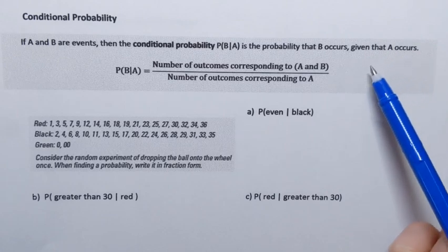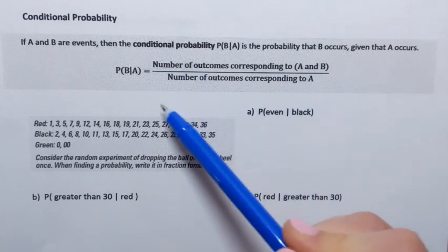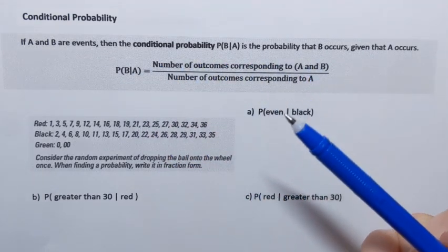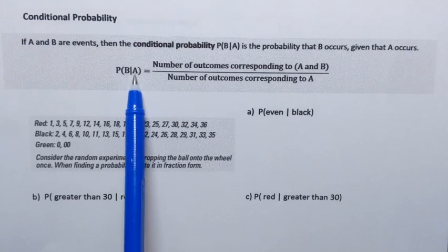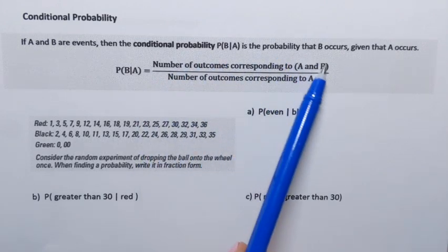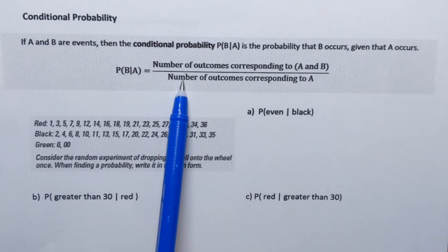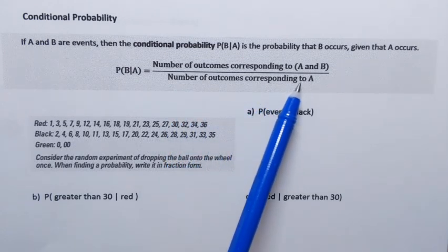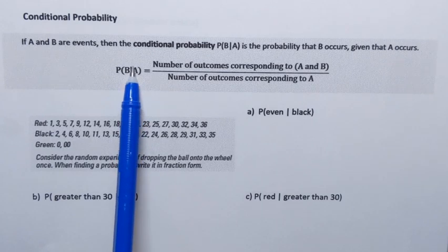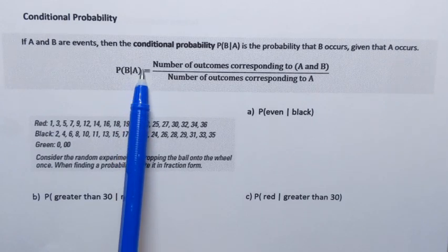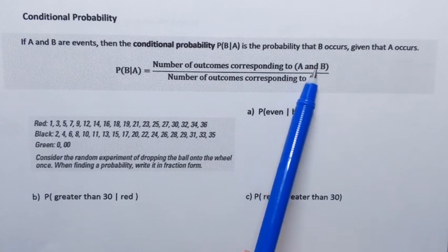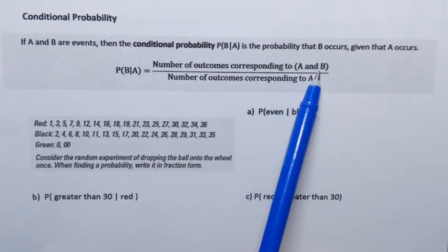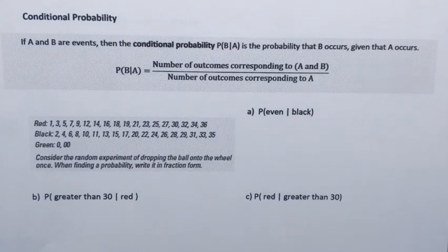As we do an example, this will all make more sense. But now let me just read the formula for finding conditional probability. To find the conditional probability of event B happening given that event A also happens, we set up a fraction. In the denominator we put the number of outcomes corresponding to event A — that's the condition. In the numerator we write the number of outcomes corresponding to both A and B happening at the same time.